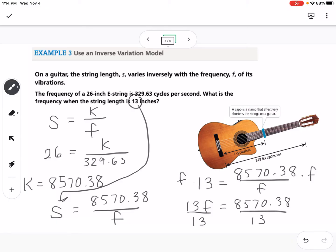What we should end up getting, the frequency would be 659.26, and the units are cycles per second. So that is our final answer.